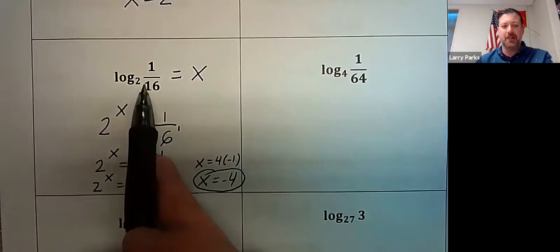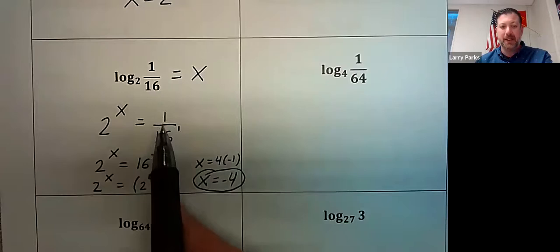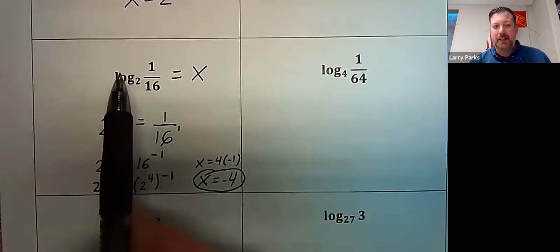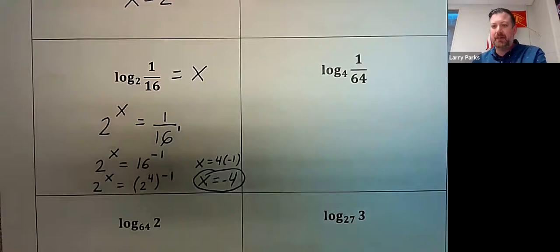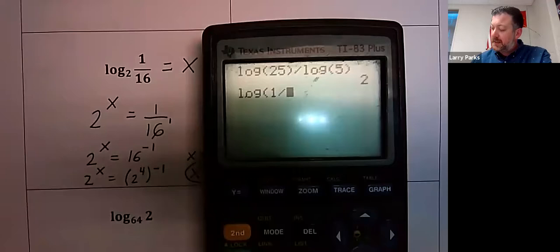Anytime you have a fraction, think about moving it to the numerator or denominator so you can get the same base. The answer here is negative 4. To check: type log of 1/16 divided by log of 2 into your calculator — it spits out negative 4, confirming the answer.